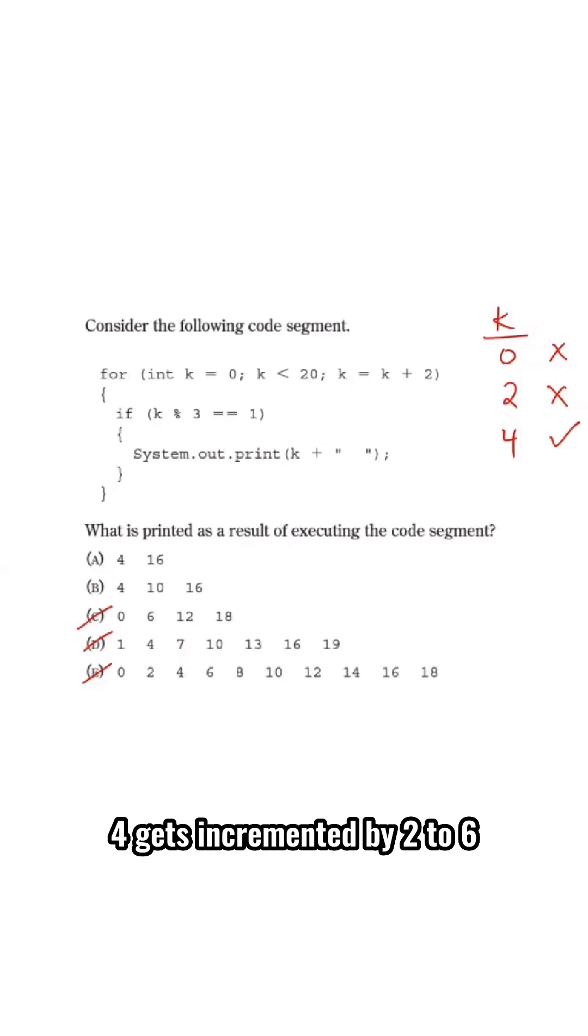Going back to the execution, 4 gets incremented by 2 to 6, 6 mod 3 is equal to 0, that will not be printed. 6 gets incremented by 2 to 8, 8 mod 3 is equal to 2, that will not be printed. 8 gets incremented to 10, 10 mod 3 is equal to 1, so that will be printed.